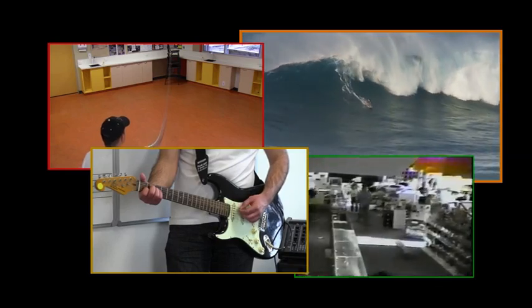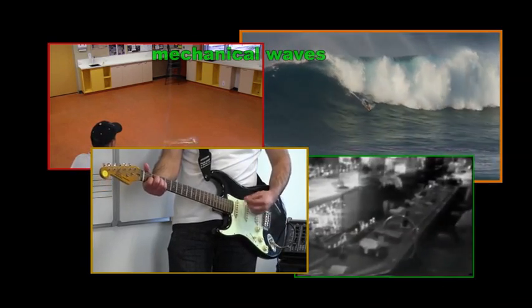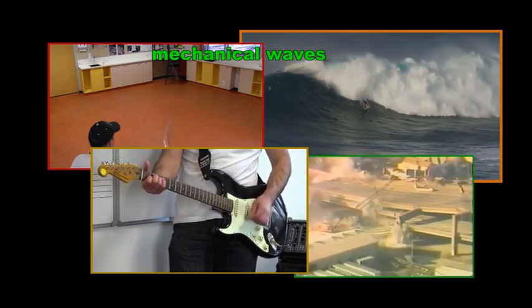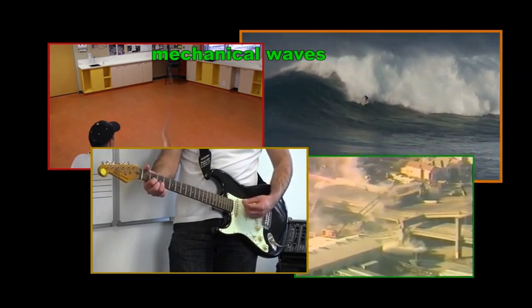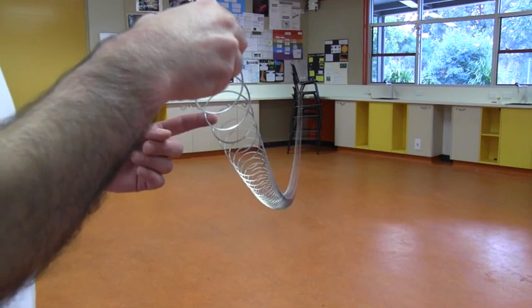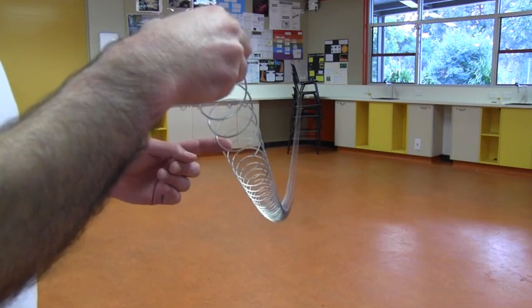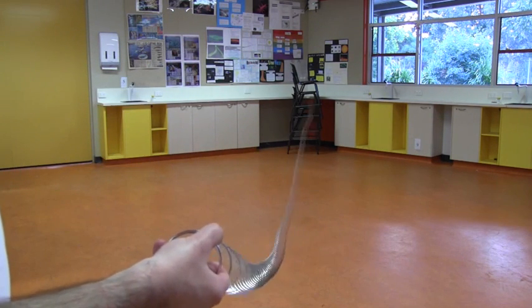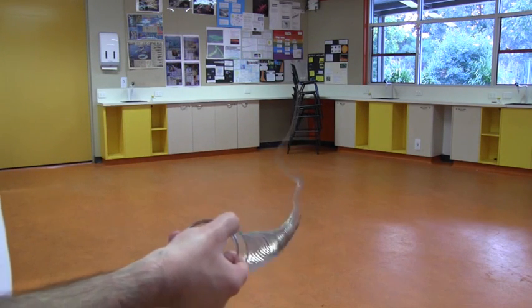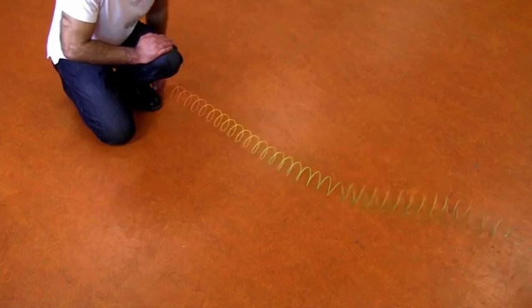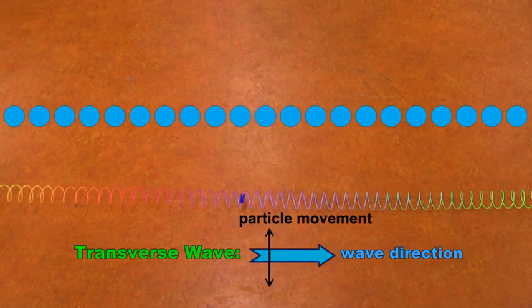All of these waves are called mechanical waves because they need what's called a medium to travel through. In a slinky wave, for example, the slinky is the medium. The movement of one coil makes the next one move, which makes the next one move, and so on. This basic process occurs in all mechanical waves. When each coil moves perpendicular to the direction of the wave, the wave is called a transverse wave.